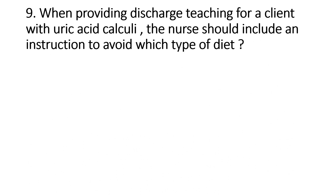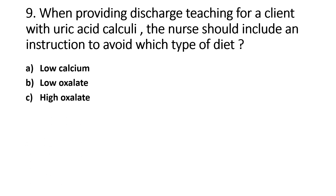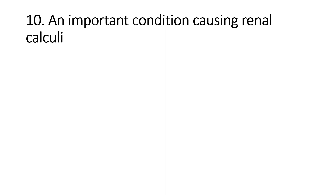When providing discharge teaching for a client with uric acid calculi, the nurse should instruct the patient to avoid which type of diet? Option A - Low Calcium, Option B - Low Oxalate, Option C - High Oxalate, Option D - High Purine. The right answer is Option D, High Purine. Purines are catabolised to uric acid, so a high-purine diet should be avoided in uric acid calculi.